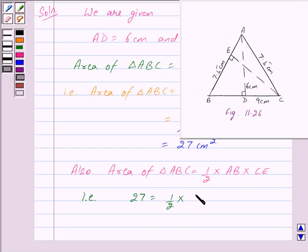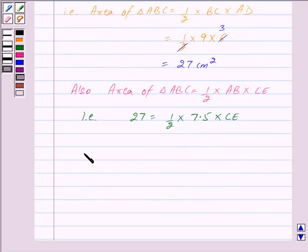This implies CE equals 27 times 2 divided by 7.5.